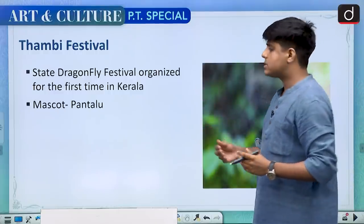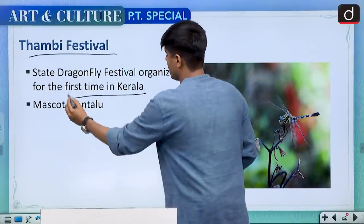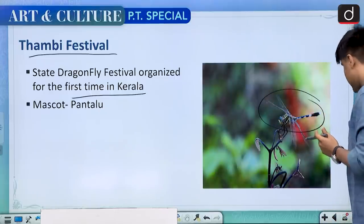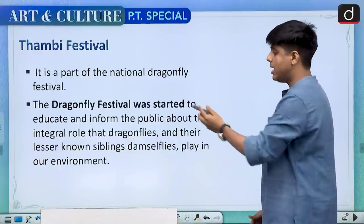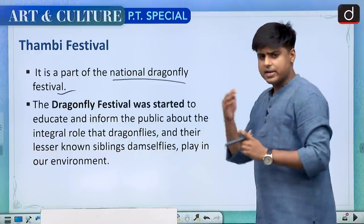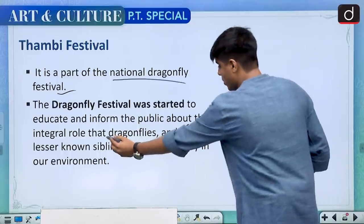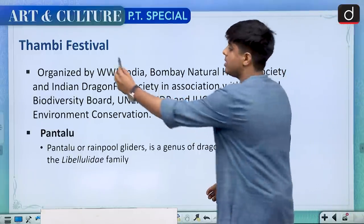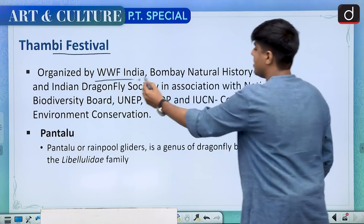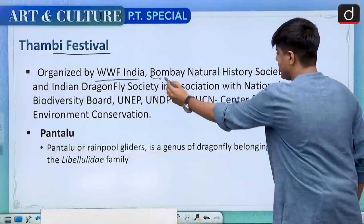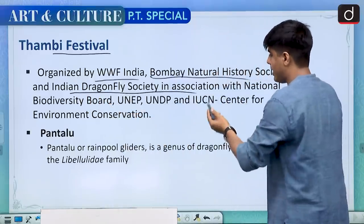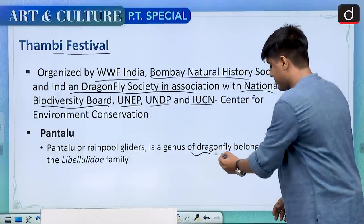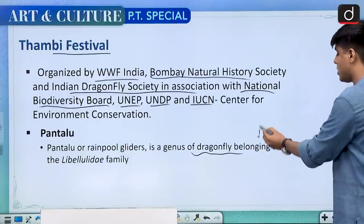Moving on to a state festival called Thambi festival, it was for the first time celebrated in Kerala. Its mascot was Pantalu, a species of dragonfly. This state dragonfly festival is part of the national dragonfly festival, and it is celebrated to educate and inform the public about the integral role that dragonflies and their lesser-known siblings, damselflies, play in our environment. It is organized by a cooperation of multiple organizations: WWF India, Bombay Natural History Society, Indian Dragonfly Society, supported by UNEP, UNDP, IUCN, and the National Biodiversity Board.